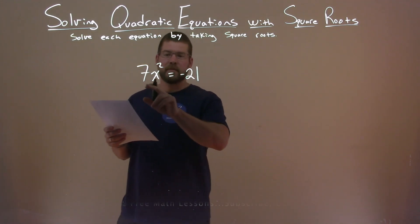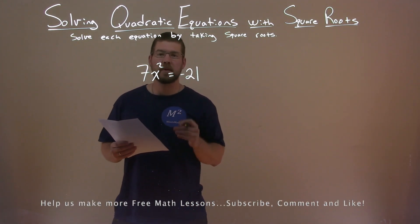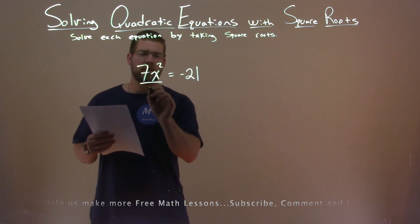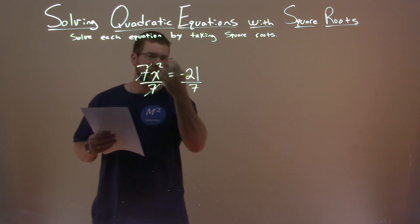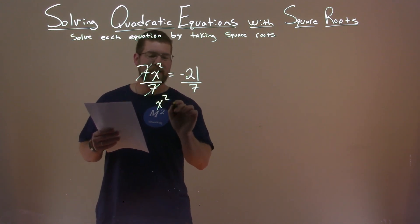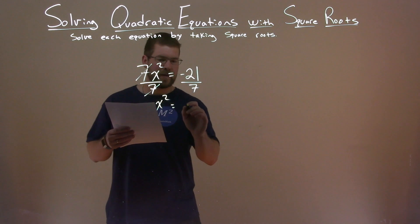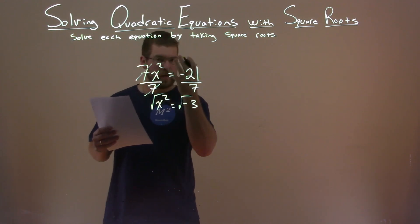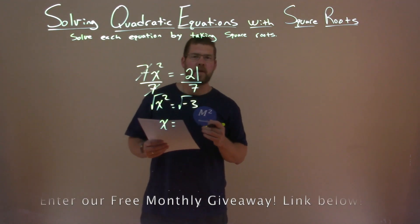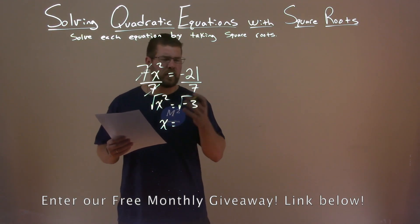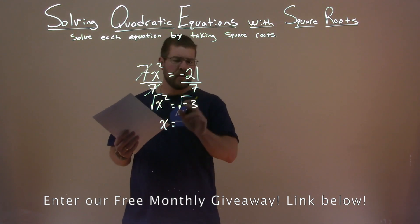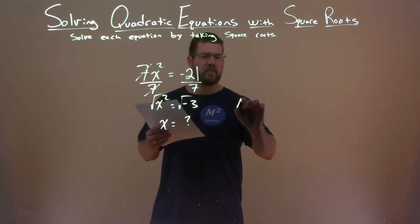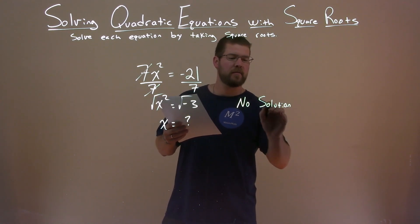We're given our problem: 7x squared equals negative 21, and we want to solve this equation by taking the square root. There's a 7 times x squared, so I divide both sides by 7 to eliminate it. We have x squared by itself, and negative 21 divided by 7 is negative 3. We're going to take the square root of both sides to eliminate that squared value. But what's the square root of negative 3? We can't take the square root of a negative number — it's imaginary. So we have no solution as our final answer.